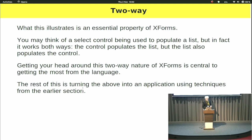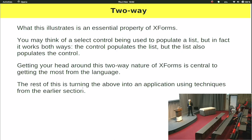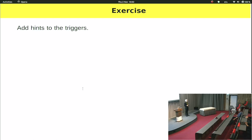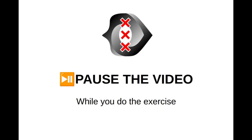Many things in XForms are two-way — your control is a display as well as an input. The two things are talking to each other. The rest of what I've talked about is in the tutorial, but it's basically just turning those two things into an app using the relevance display technique from the first chapter. Now's the time for another exercise. Take the last example on the page, right-click, save it into your examples folder, and add hint elements to the triggers so that when you hover over them, it tells you what's going to happen.